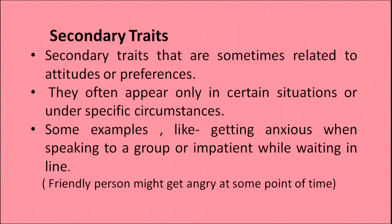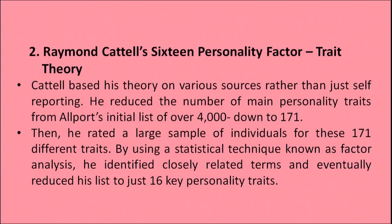Secondary traits are sometimes related to attitudes or preferences. They often appear only in certain situations or under specific circumstances. For example, getting anxious when speaking to a group, or a person might get angry at some point, or feel impatient while waiting in a line. These are all examples of secondary traits.